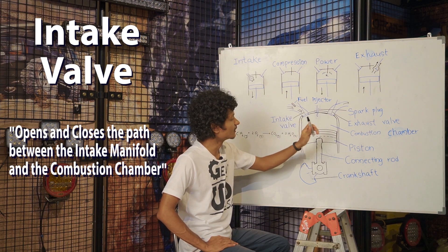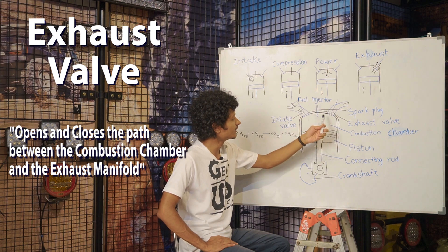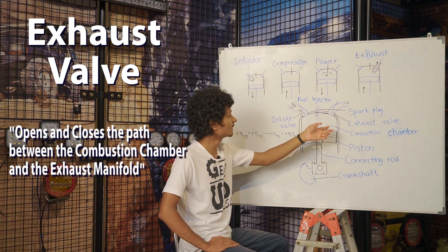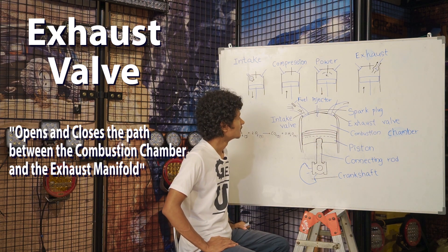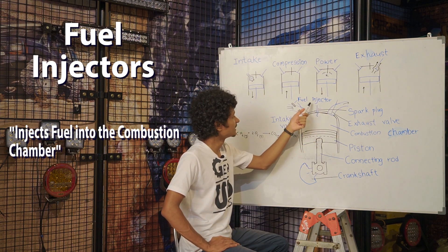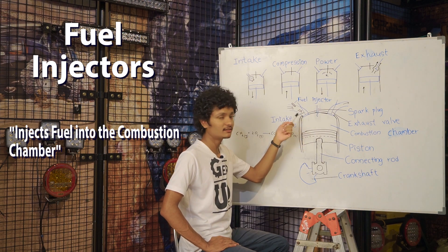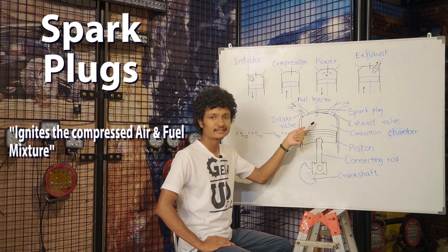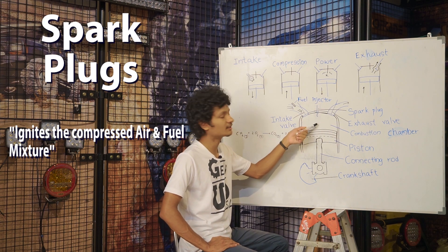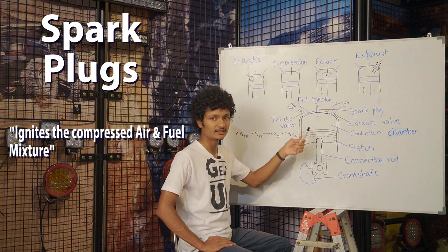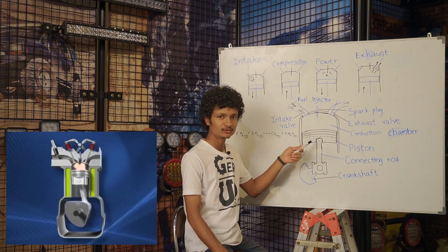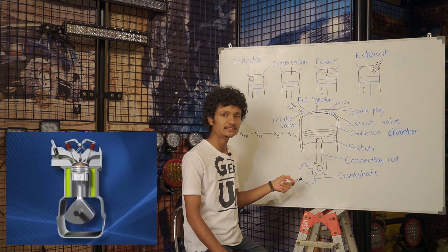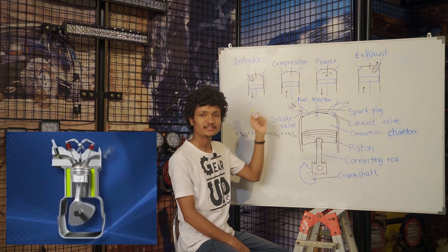In this video, we can talk about the exhaust valve and combustion chamber. We can talk about the fuel injector and combustion chamber, and the spark plug in the air-fuel mixture. We can also talk about the linear motion in the piston along the circular motion, and the crankshaft in the engine.